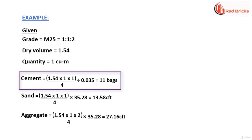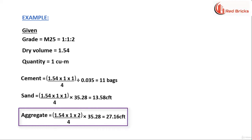which is equal to 11 bags of cement. For quantity of sand, it is 1.54 into 1 into 1 divided by 4 whole multiplied by 35.28 which is equal to 13.58 cubic feet of sand. The quantity of aggregate is equal to 1.54 into 1 into 2 divided by 4 whole multiplied